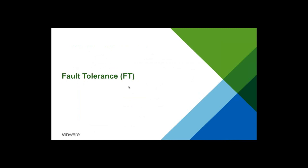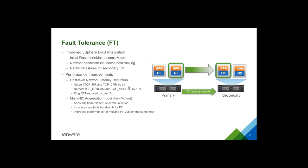Jumping into Fault Tolerance: FT on 6.5 has some improvements, especially around performance. There are no new FT features per se — still no more than four virtual CPUs, 64 GB of memory, everything reserved. The same requirements from version 6 apply to 6.5: you'll need the dedicated 10 gig link for fault tolerant logging, shared storage for the primary VMX and tiebreaker files. VMDK files can reside on dedicated storage, similar to vSphere 6.